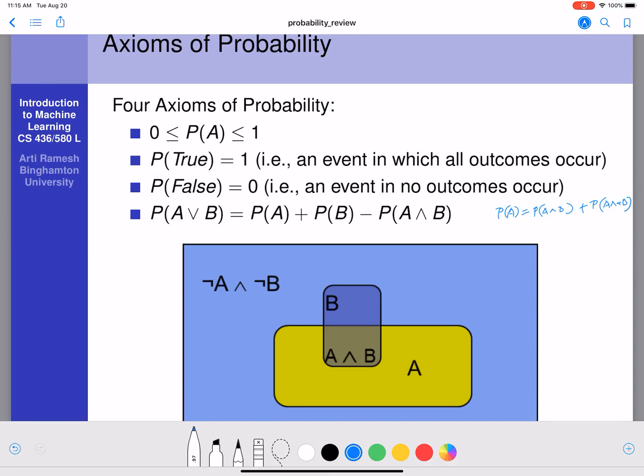Now, what is P of A and not B? So what is not B? Not B is this entire area, which is not B. This entire area, this outer area is not of B.